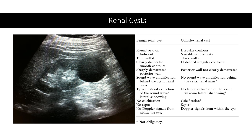On the right, you can see some common features seen in benign versus complex cysts — a chart you'll commonly run into when studying for Step 1 and Step 2. Benign cysts commonly have a round or oval shape, are thin-walled, and don't have calcifications or septae, whereas complex cysts can have irregular contours, thick-walled calcifications, and many septations.